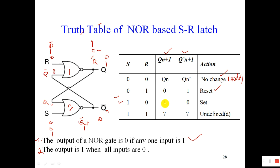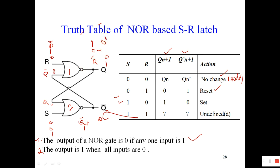We can understand this with an example. Suppose the previous value of Q was 0, and R=0, S=1. Since any one input is 1, the output will be 0. That 0 is part of the input of gate 1. Then 0 plus 0 equals 0, inverted gives 1. So the output Q becomes 1. This confirms the Set condition.